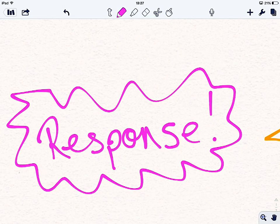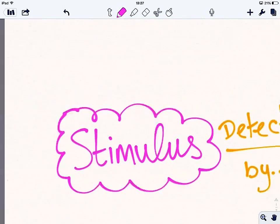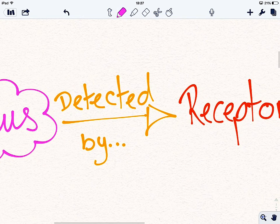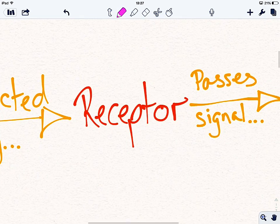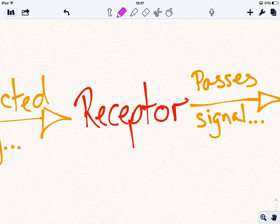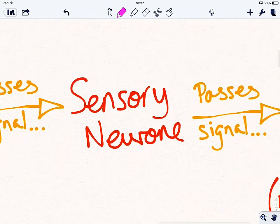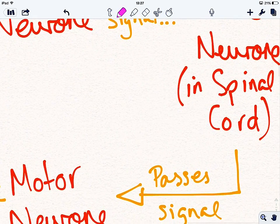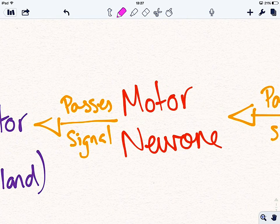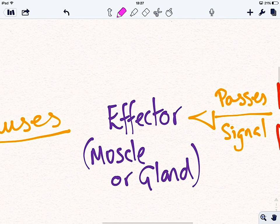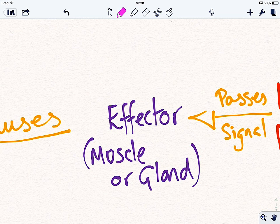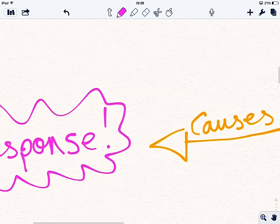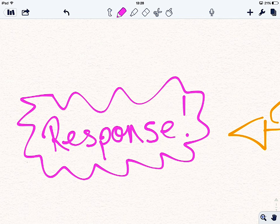So if the stimulus, for example, going through that again, if the stimulus was touching a hot pan, that would be detected by pain or heat receptors in your hand or in the skin of your hand, which would pass the signal to a sensory neuron, which would pass the signal to a relay neuron in the spinal cord, which would then pass the signal to a motor neuron, which would then pass the signal to an effector. In this case, it would be a muscle in your hand telling you to let go of the pan, and that causes the response, which is dropping the pan or letting go of the hot pan.